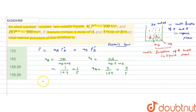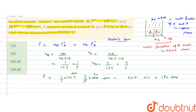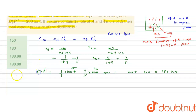Now we can calculate the total pressure of the mixture in the liquid phase: P_total = (1/5) × 100 + (4/5) × 200, both in torr. This gives us 20 plus 160, which equals 180 torr. So the total vapor pressure of the mixture in the liquid phase is 180 torr.